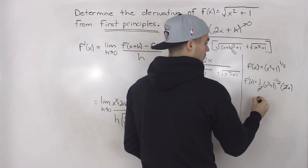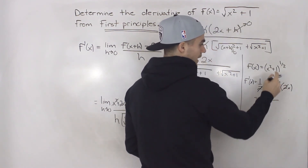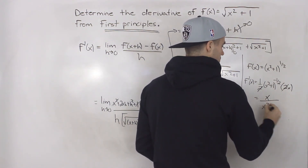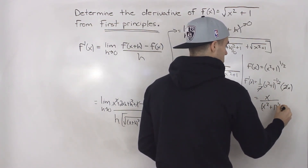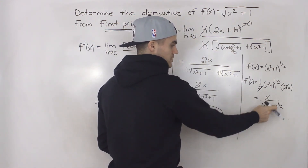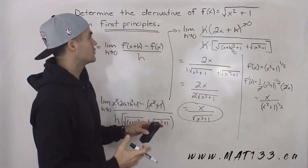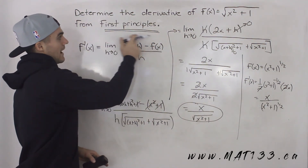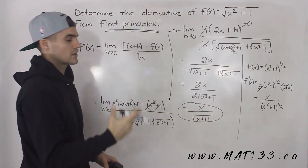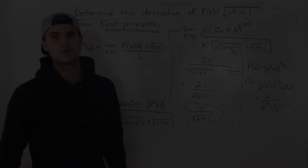Notice the twos cancel, leaving x at the top. Then x squared plus one to the power of negative one half moves to the denominator to give a positive exponent, becoming the square root of x squared plus one. So these two results are the same. Whenever you're doing a question where they ask you to find the derivative using first principles, you can always check your answer after using the quick shortcuts we learn throughout the unit.